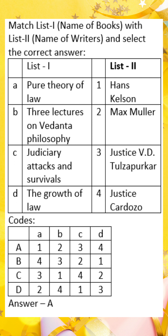Kelsen's pure theory of law has been criticized for a number of reasons. Some critics argue that it is too formalistic, and that it does not adequately account for the social and political dimensions of law. Others argue that Kelsen's distinction between law and morality is too sharp. Despite these criticisms, Kelsen's pure theory of law remains an important and influential theory of law. It has helped to shape our understanding of the nature of law and its role in society.